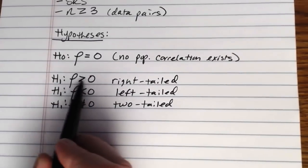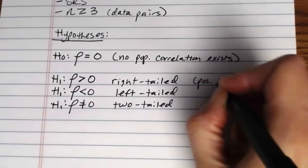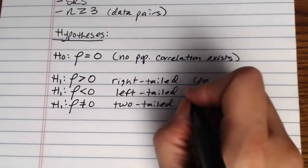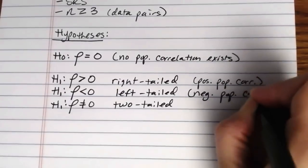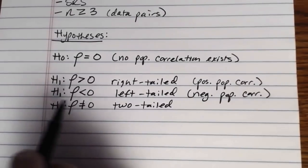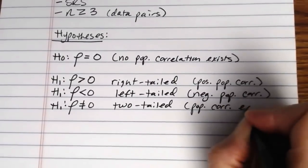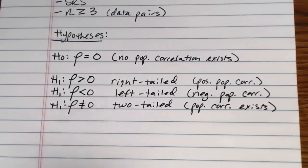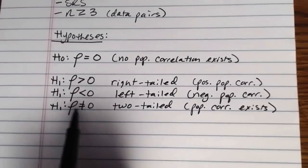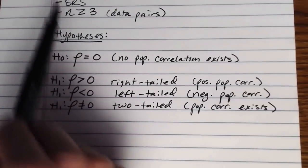Greater than zero would test for a positive population correlation. Rho less than zero would be testing for a negative population correlation. And a not equal to would just be testing for is there a population correlation. But this alternative hypothesis doesn't tell you which direction the correlation is, but if you just want to know are they related, you would use a not equal to. So that's how the conditions look and how the hypotheses work.